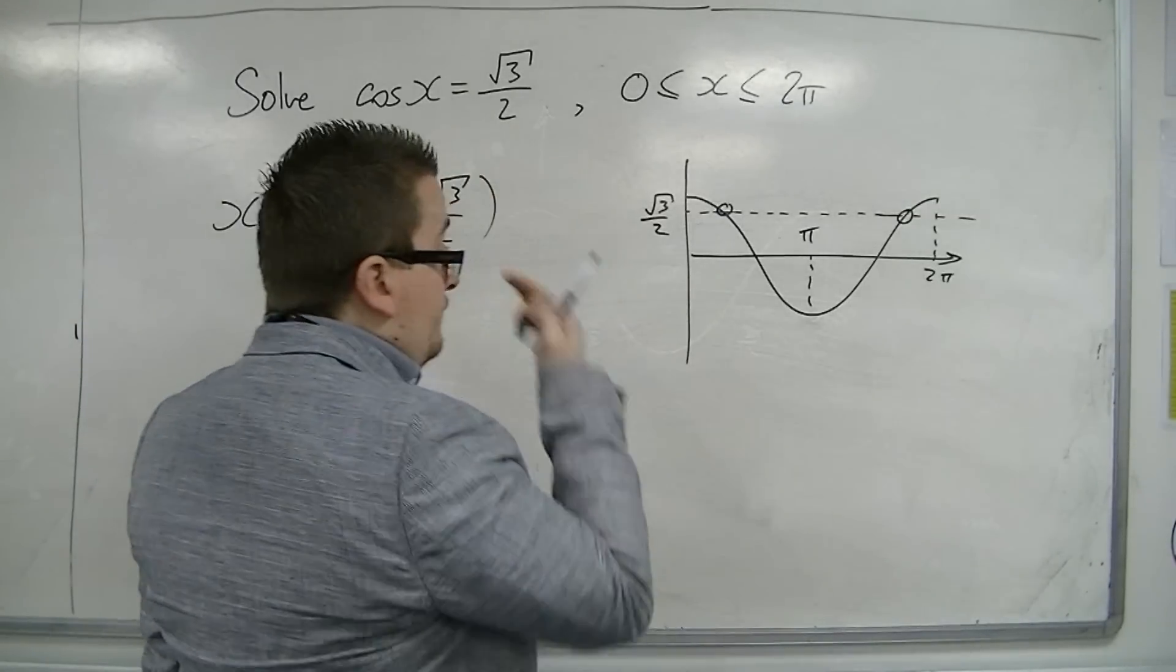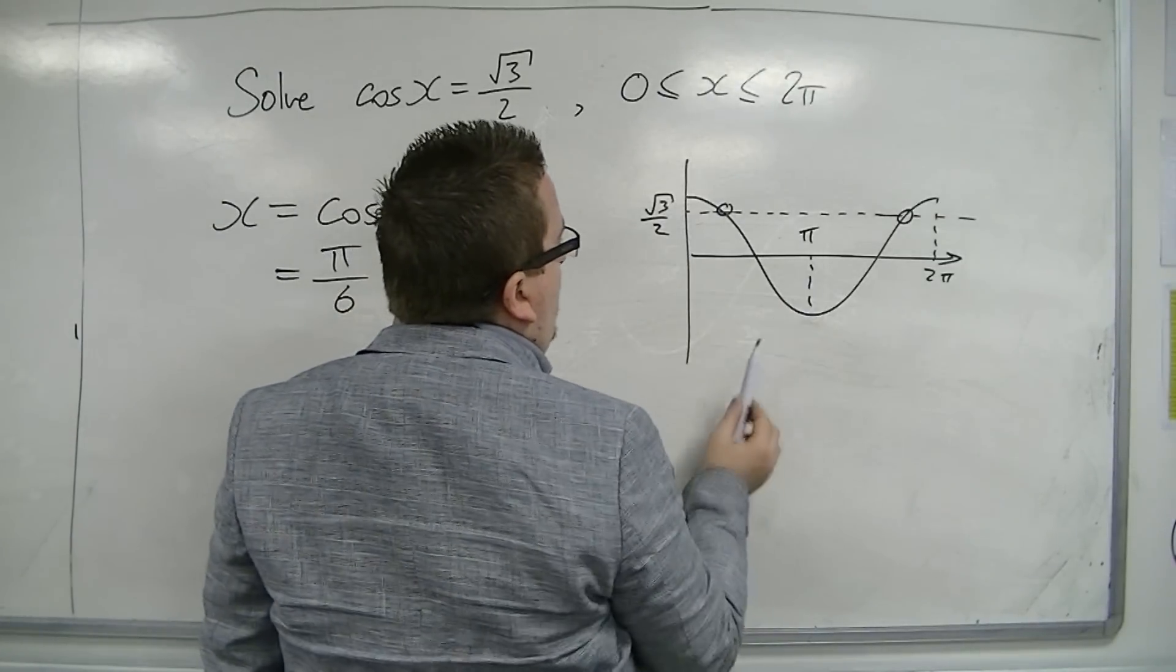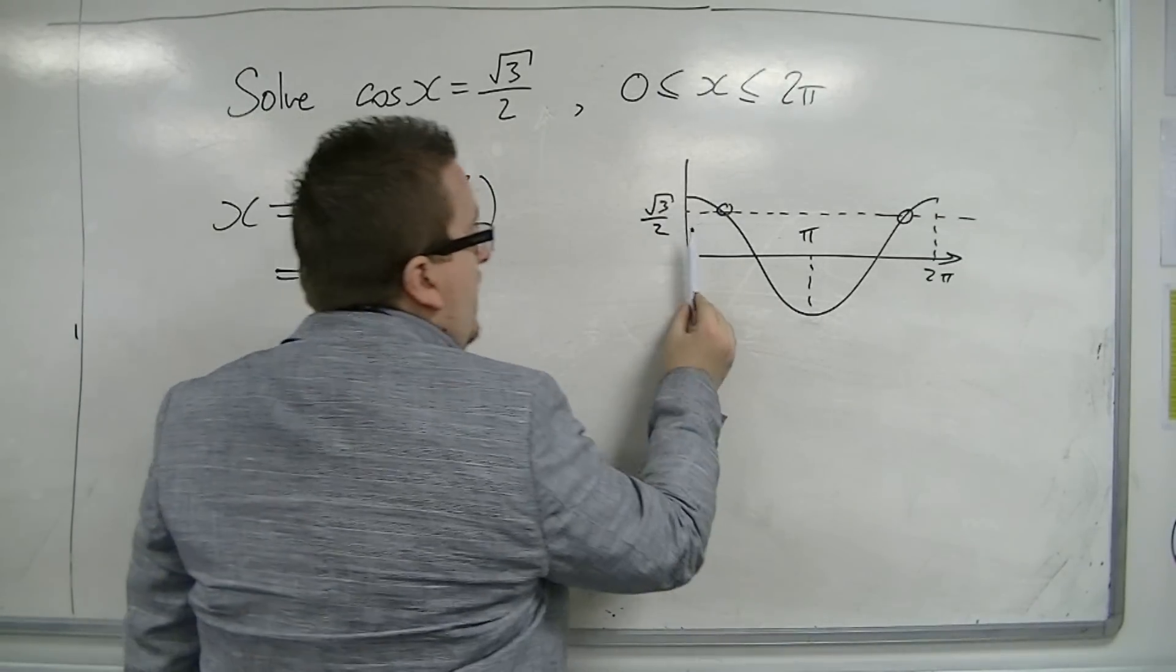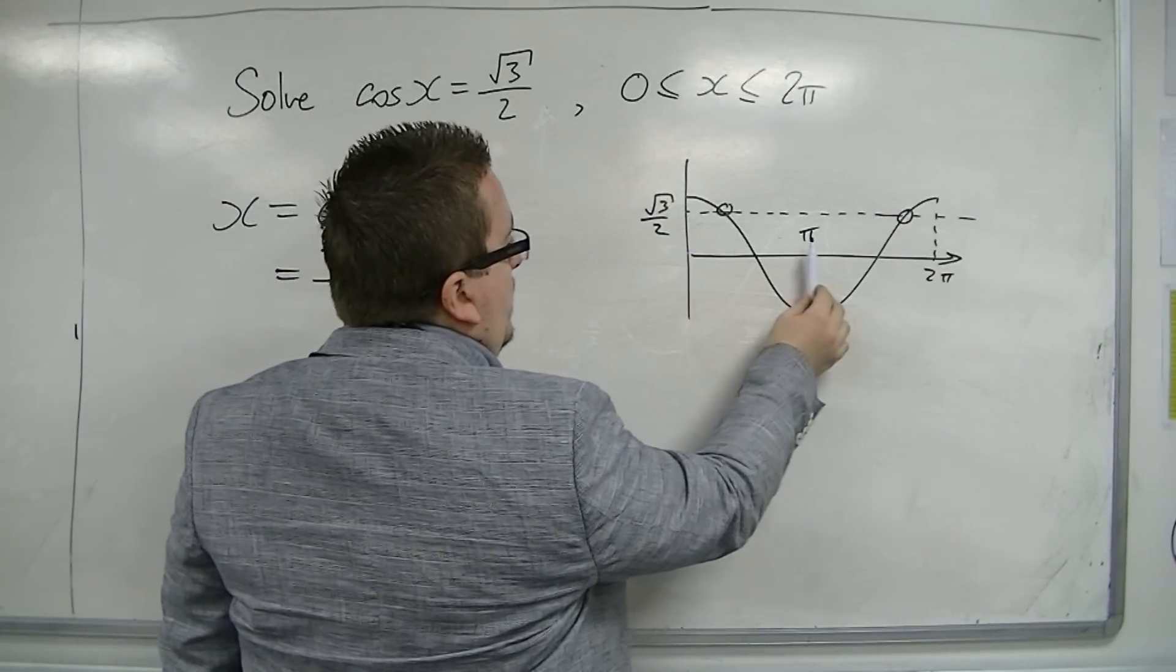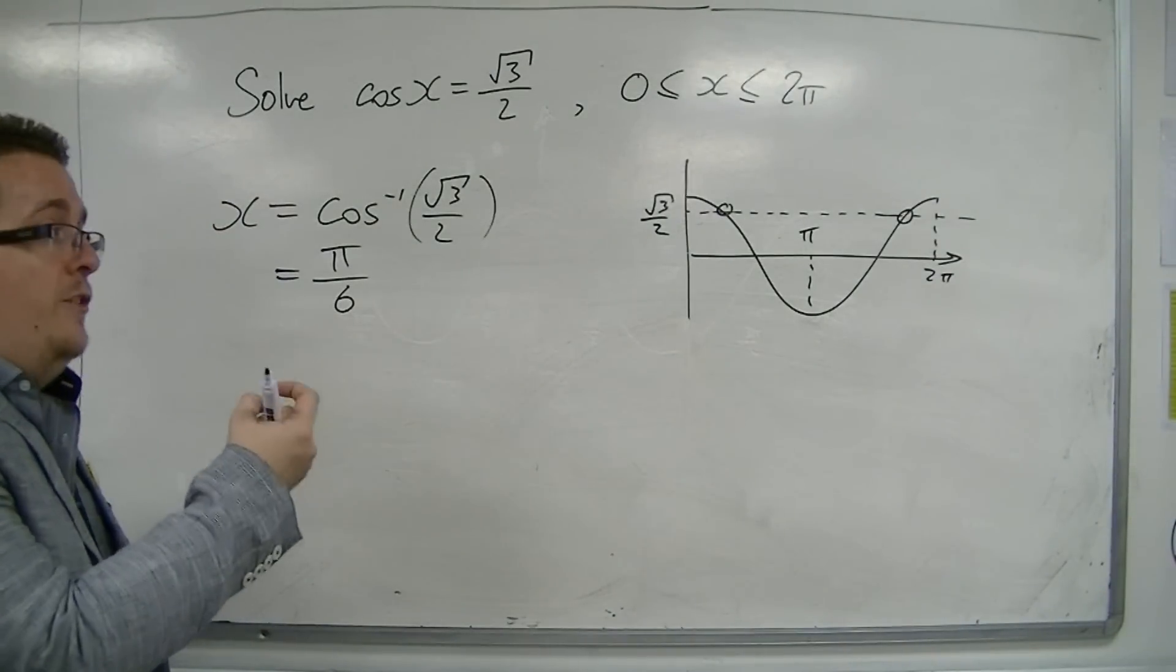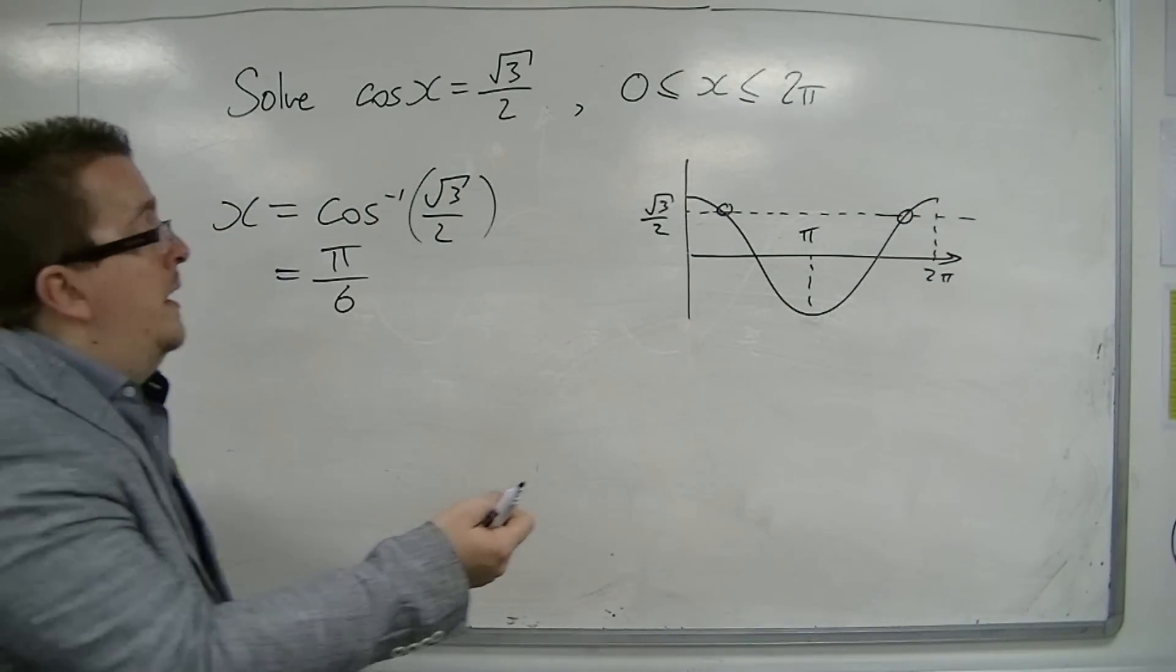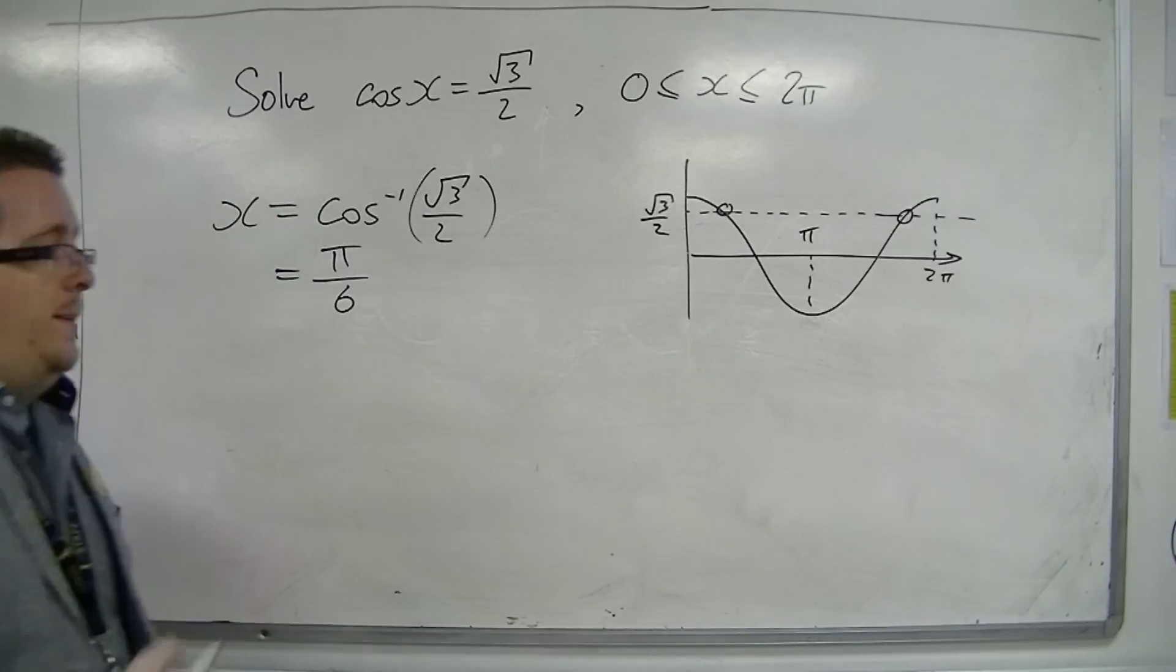Because cosine will only give me a value between 0 and π. The calculator will only give me a value between 0 and π. So, it's only looking between those two values. Much like with sine, it only looks between minus π over 2 and π over 2. And the reason behind that, as I said, will be coming in core 3.